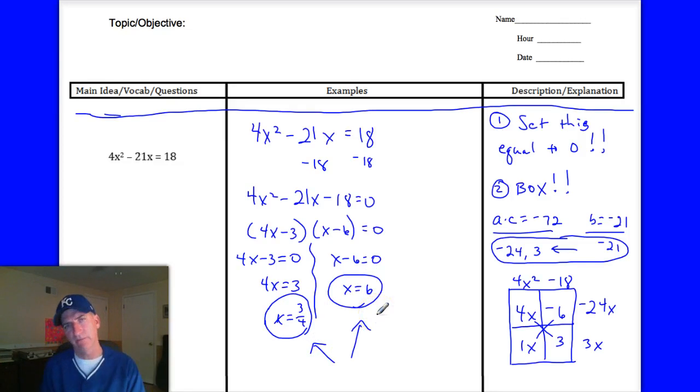So again, if we were to graph that, those would be your two x-intercepts. And the vertex would be halfway between those two points there. So that's it. You have to be able to factor. So factor away. And solving is simple once you can factor it. See you soon. Bye.